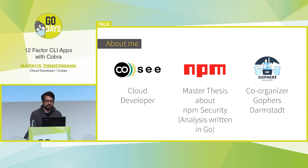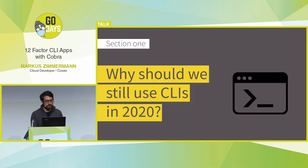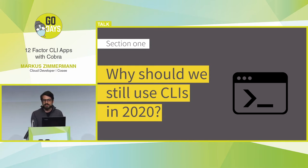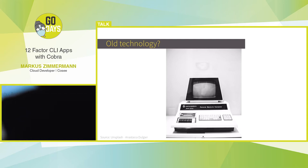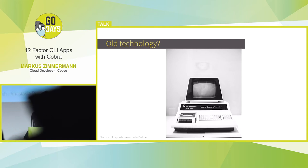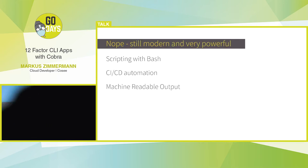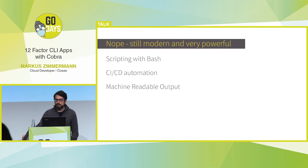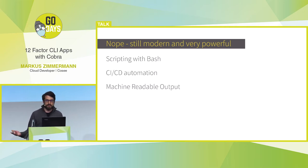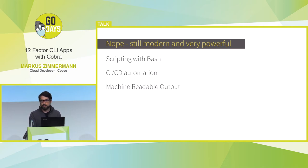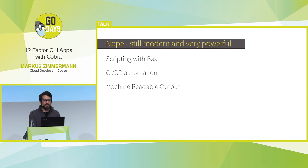The first question you might get asked is: why should we still use CLIs in 2020? It could seem like ancient technology from old computers, but I think that's not the case. CLIs are still powerful and very modern because you can script with bash, which is super important for all automation tasks, and especially with DevOps, automation gets more and more important.